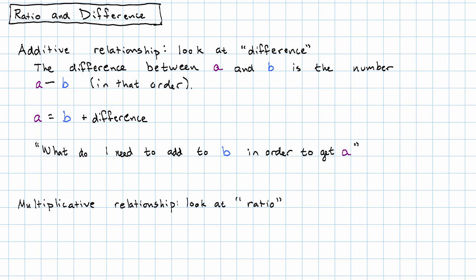The ratio of two numbers — we would say the ratio of a to b — is just the number a over b, again in that order.